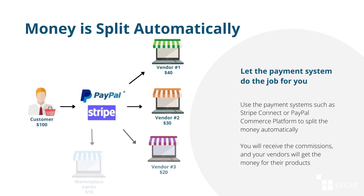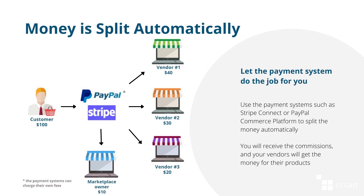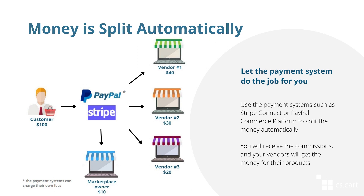Another way to deal with money in a marketplace is automatic funds transfer to vendors using payment systems such as Stripe Connect and PayPal Commerce Platform. How does it work? The customer pays for the order, then a payment system splits the money between vendors and the administrator. The admin receives their commissions, and the vendors get the money for the products.